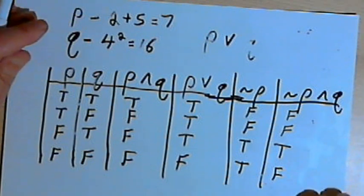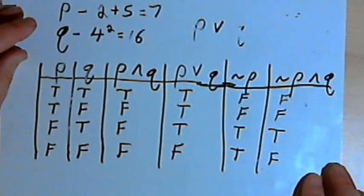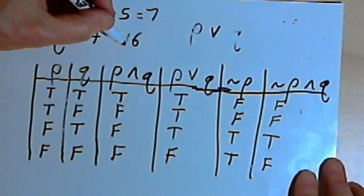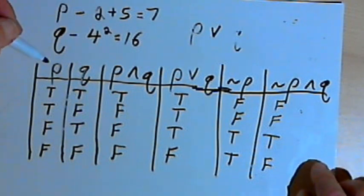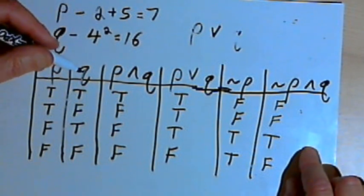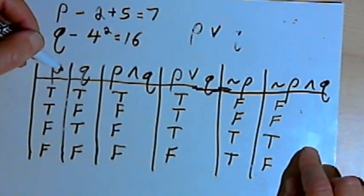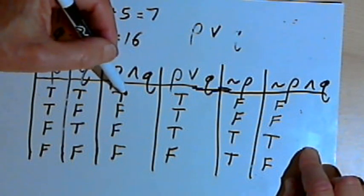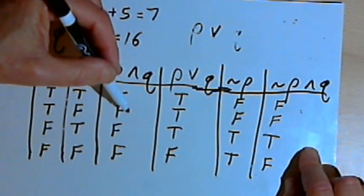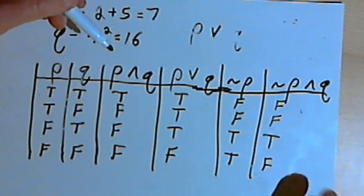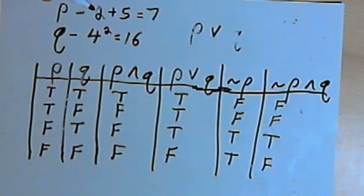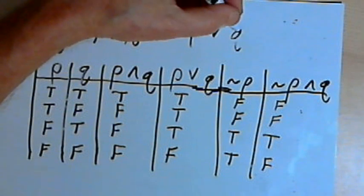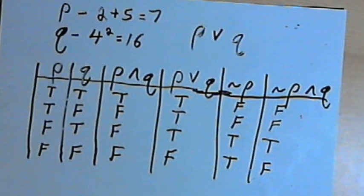I could keep going with this, showing all the different ways to combine P and Q, not P and not Q, and variations, to find out the truth of those combinations. But I think we're going to stop here. Hopefully you've got the idea, and I'll see you next time.